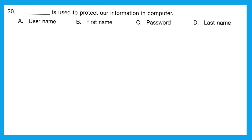Question 20: dash is used to protect our information in a computer. Whenever you open Gmail or any website, or even the computer itself, what do we use that protects everything without which it does not open? The correct answer is C, password. Password is the secret code used to protect our information in a computer.